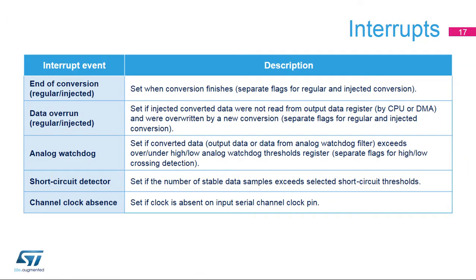A set of interrupts related to DF-SDM events has been implemented to increase CPU performance. This table lists all the DF-SDM interrupt sources: end of conversion events with separate flags for regular and injected conversions, data overrun events with separate flags for regular and injected conversions, analog watchdog events, short-circuit detector events, and channel clock absence event.